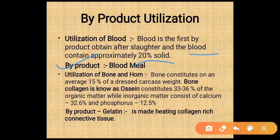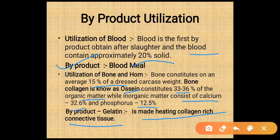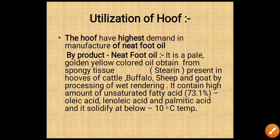Utilization of bone and horn: bone constitutes on average about 15% of the dressed carcass. Bone collagen constitutes about 33 to 36% of organic matter, while inorganic matter consists of calcium at about 32.6% and phosphorus at about 12.5%. The byproduct obtained from bone and horn is gelatin, which is produced by heating of collagen-rich connective tissue.